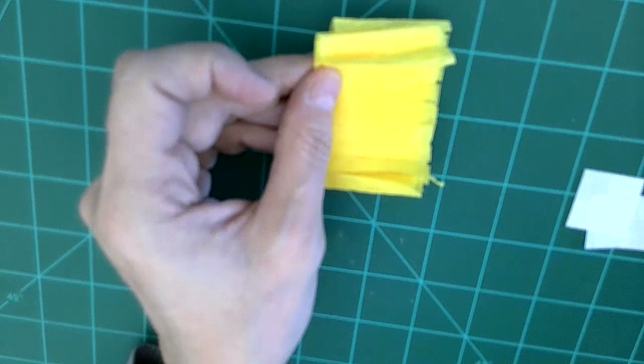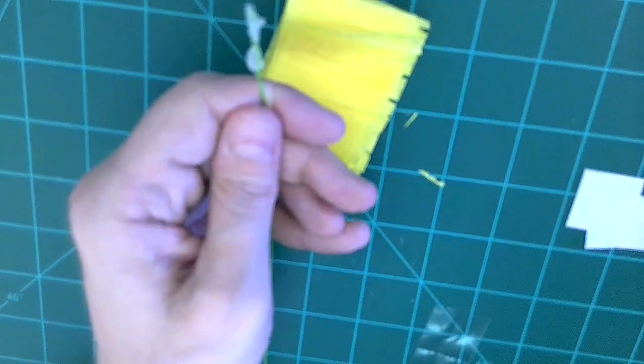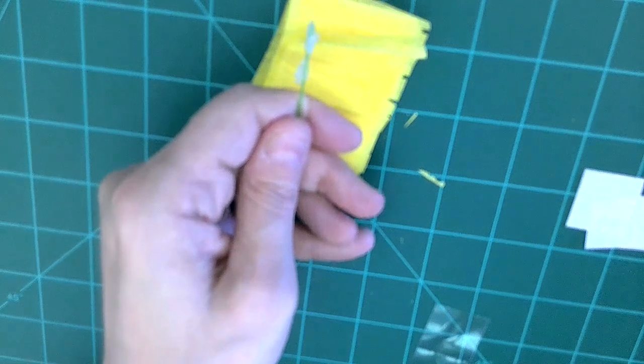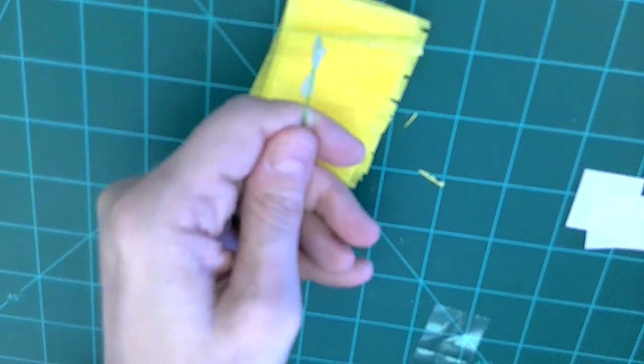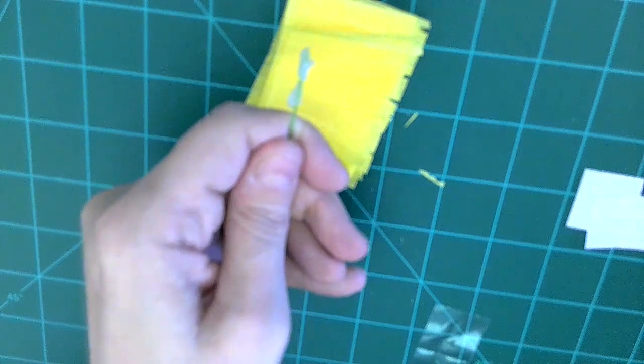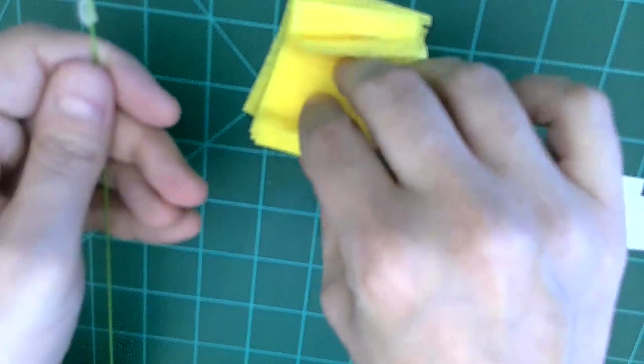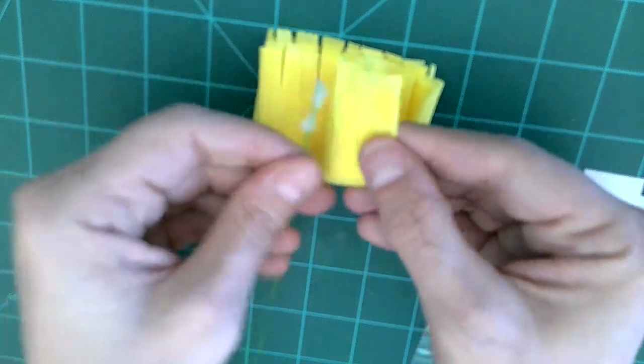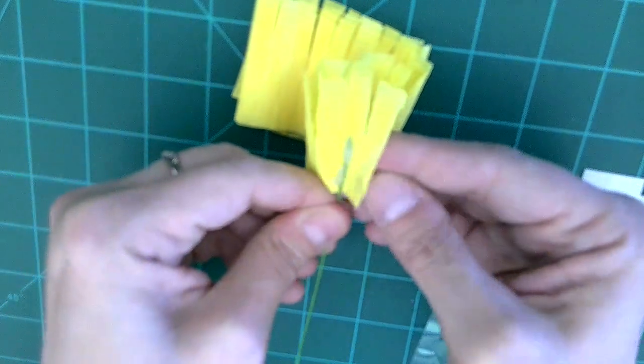Once you have that done, we're going to get out our floral stem and our glue dots. As we did for the rose type flower, I put the glue dots right on the floral stem wire. And now I'm going to accordion fold the crepe paper streamer onto the floral stem wire.